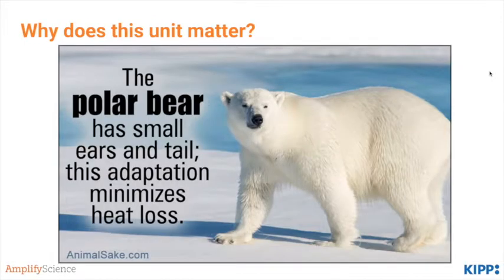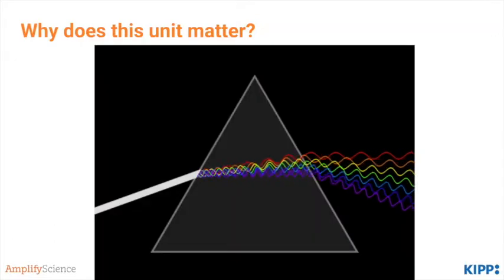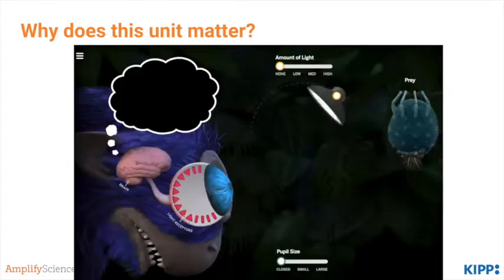So why is this unit important? It's starting to build a foundation for students' understanding of adaptations and how certain traits help all animals survive, but traits are different from one animal to the next. It also lays the foundation for students in physiology to learn more about how the eye, the nervous system, and other sensory receptors work. It lays the foundation for students understanding how light works so they can go deeper into the physics of light in later years.